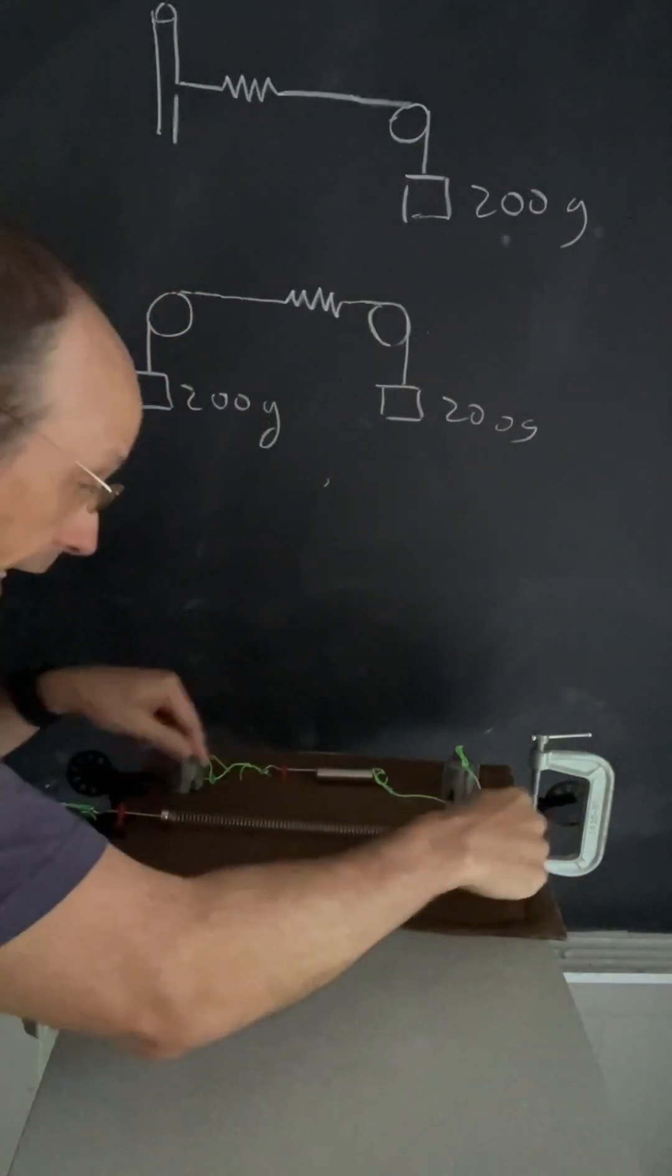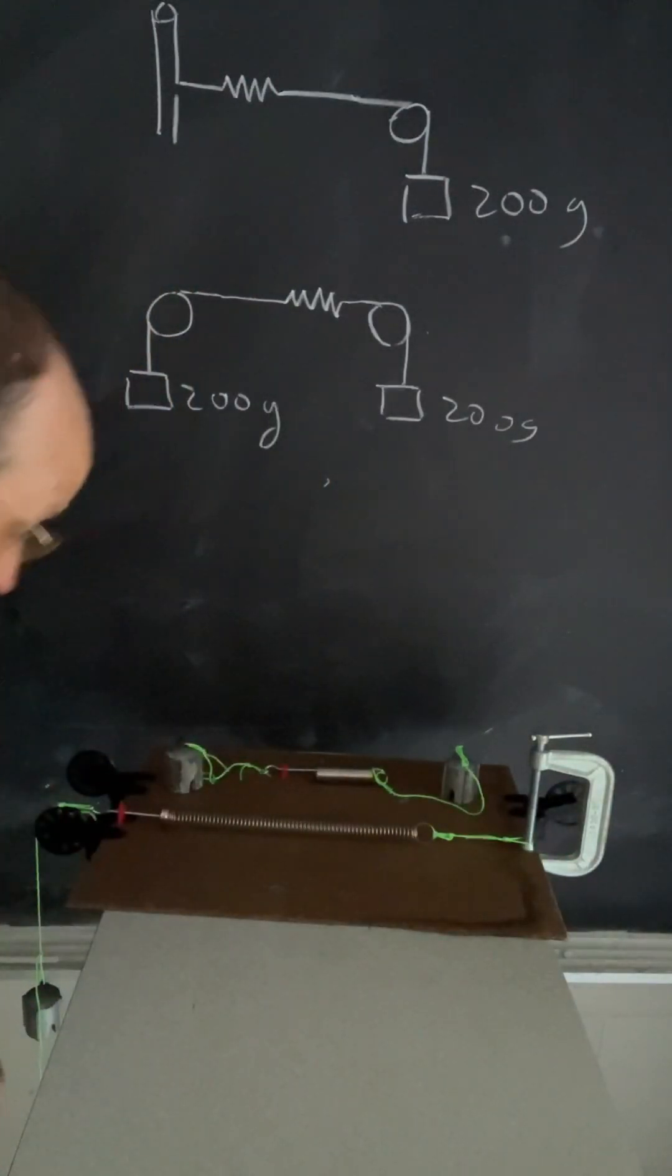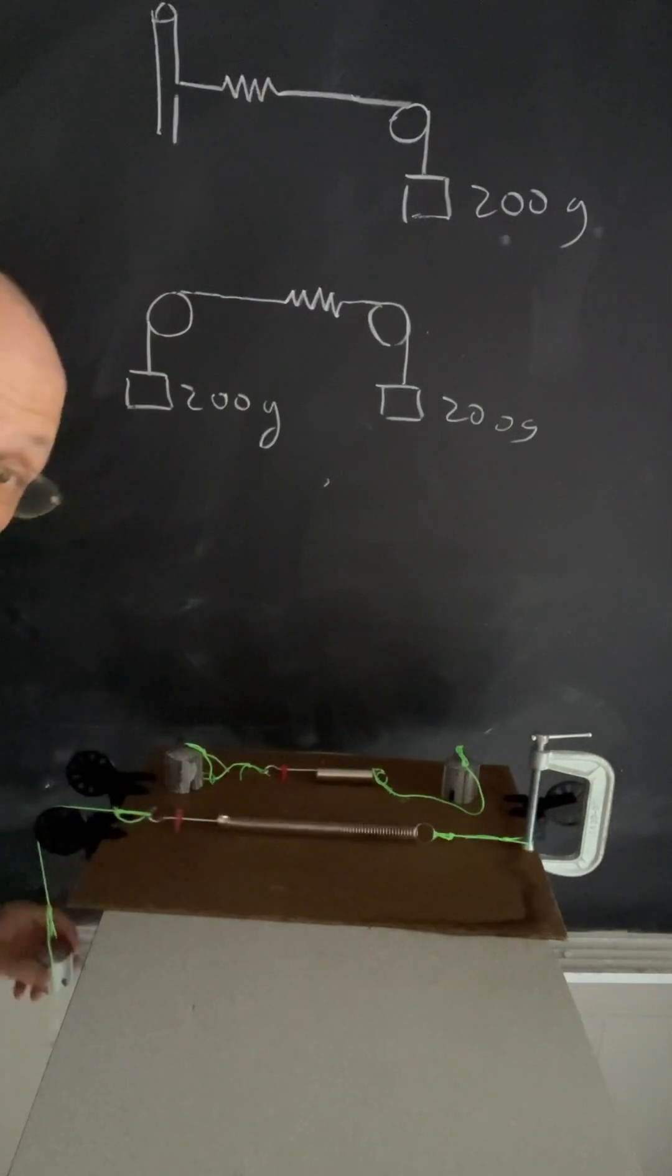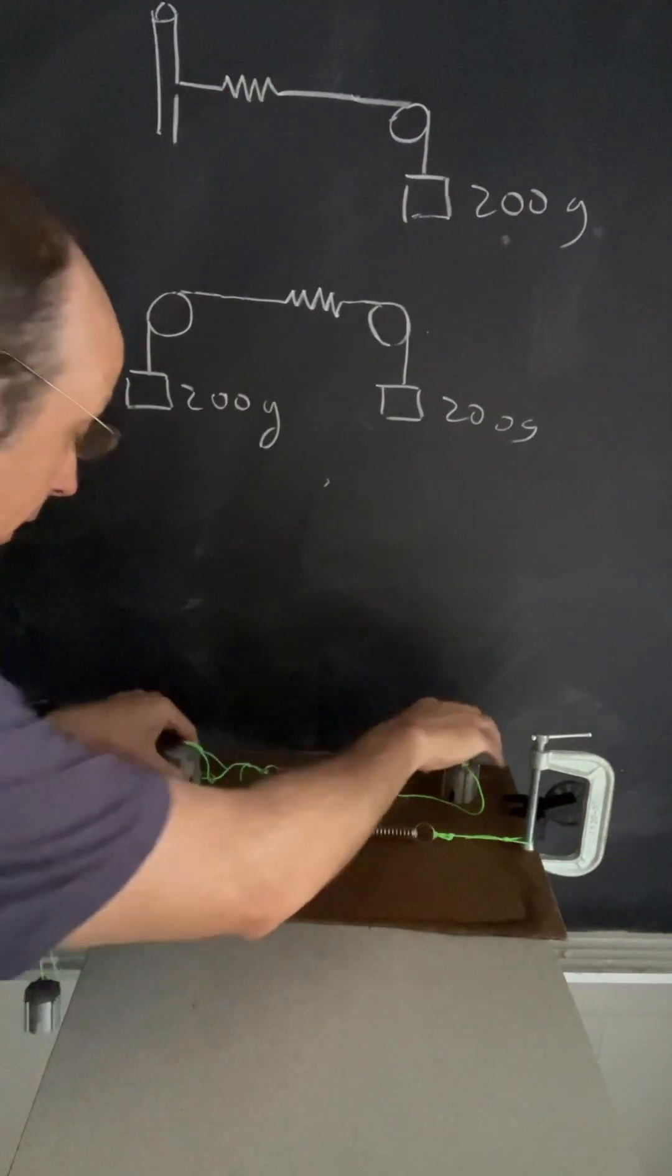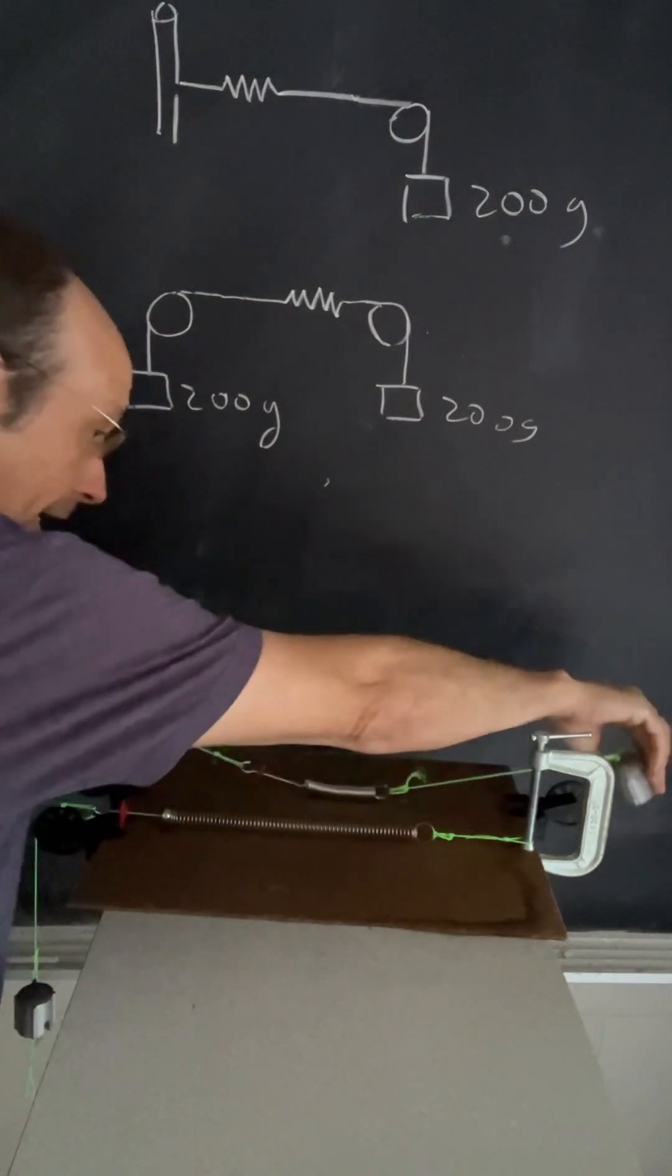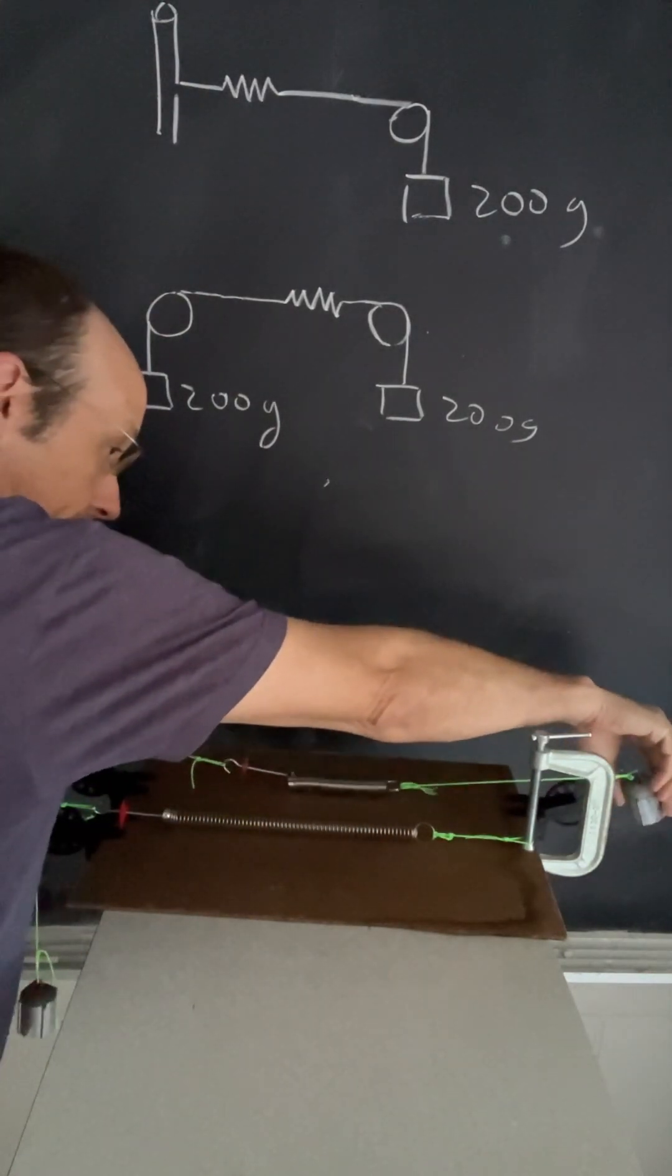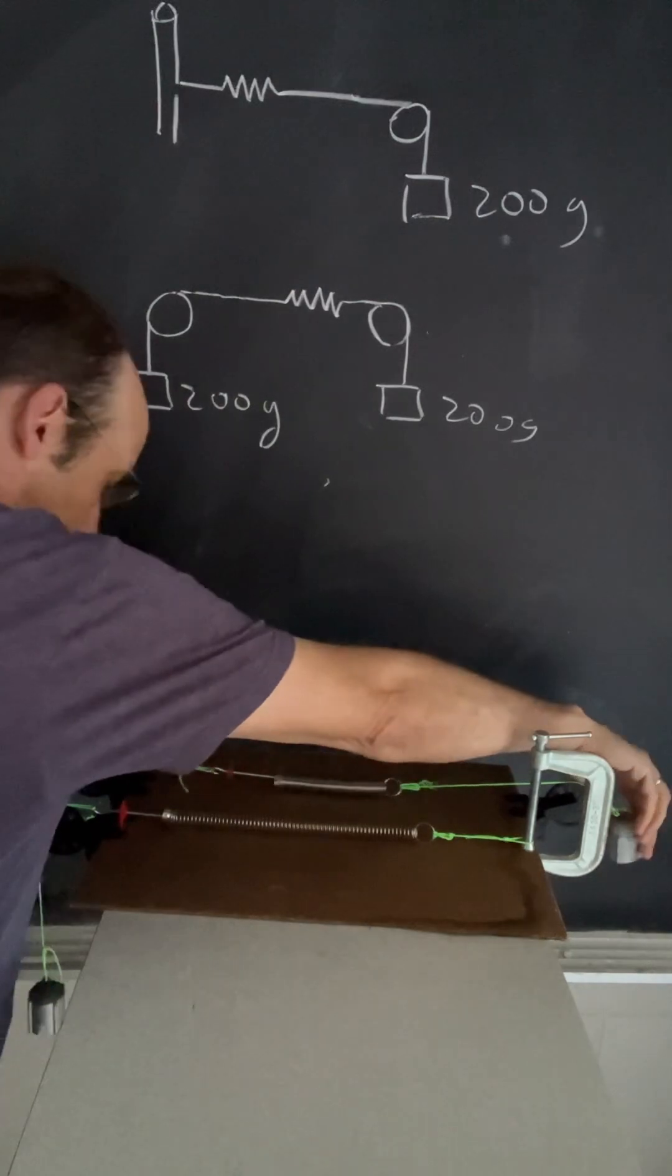Here's your physics answer. So I have a spring stretched by hanging a 200 gram mass over the edge of this pulley. Now I have two masses connected to a spring. Let's hang those over the pulleys and see what happens.